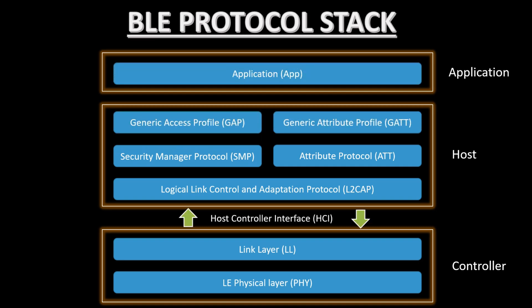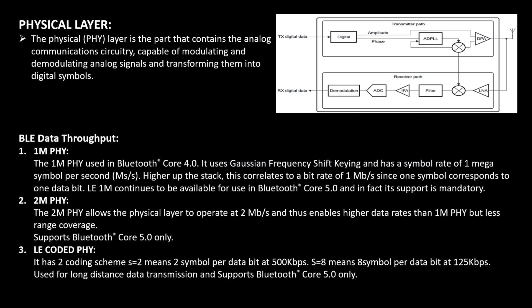We will have a short understanding of each protocol stack layer before we start the coding session. The physical layer is a hardware layer that contains the analog communication circuitry capable of modulating and demodulating analog signals and transforming them into digital symbols. As you can see in the diagram, it will have an antenna, some filters, and ADCs. When data is received, demodulation is done, and when data is transmitted, modulation is done.